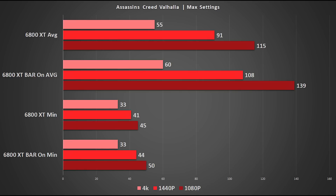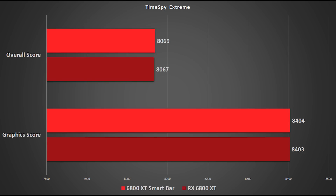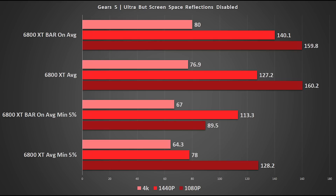I decided to run Time Spy Extreme, and this is one of those examples where resizable bar basically does nothing. The graphics and overall score change literally just a couple of points — it is well within margin of error. Moving on to Gears 5: 127 FPS at 1440p goes to 140 — that I consider tangible. At 4K, 77 FPS goes to 80, so a small benefit, but not bad.